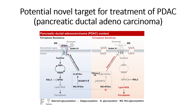Both 4F2HC and B3GNT3 can be reduced either by using PNGase or tunicamycin. This is the crosstalk between ferroptosis and aberrant glycosylation that makes PDAC cells ferroptosis-resistant, and this could be one of the reasons why some traditional chemotherapies do not work on PDAC.